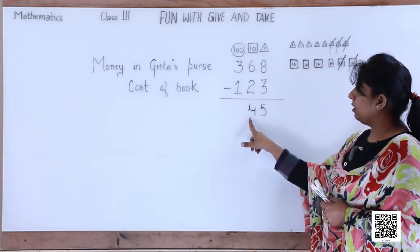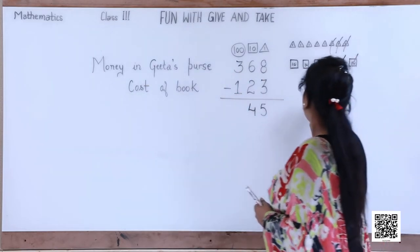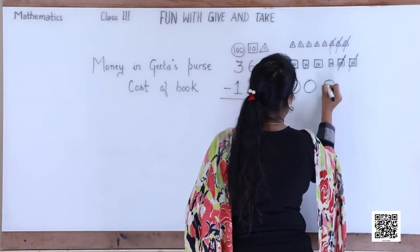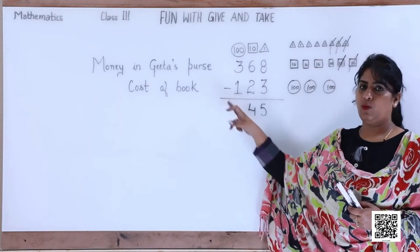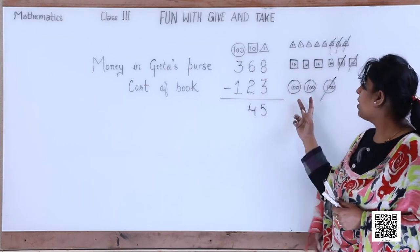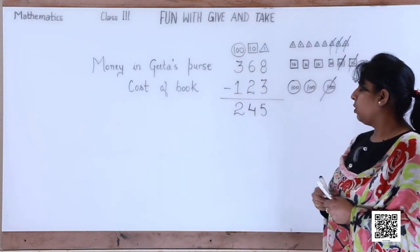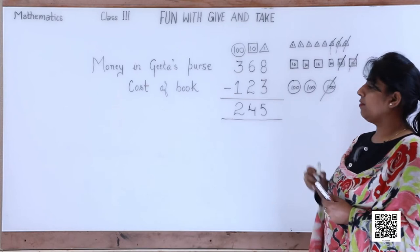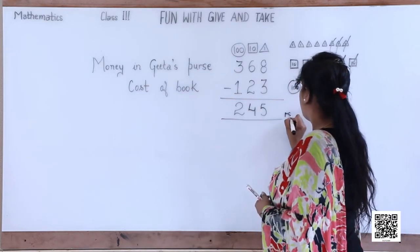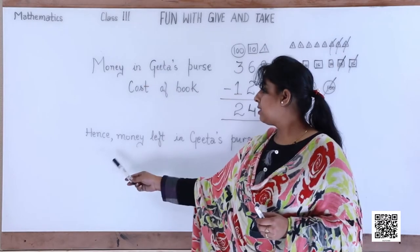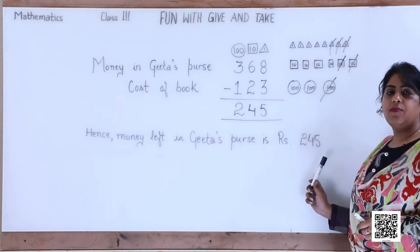Now how many hundreds do we have? Three. So we draw three hundreds: one, two and three. How many hundreds are we going to cancel? One. Let's cancel one — how many are left? Yes, two hundreds are left, so we write two. This is the amount left in Gita's purse: two hundred and forty-five rupees. Never forget to write rupees at the end!